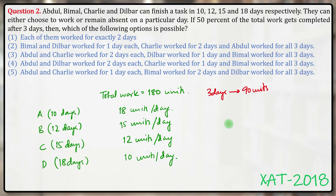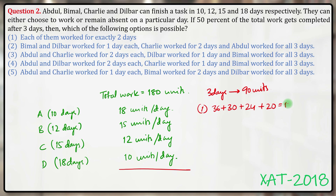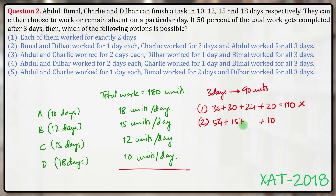Let's work out each option. For answer option 2: Abdul and Charlie — Charlie works for 2 days, Abdul works for all 3 days. Abdul working for all 3 days gives 54 units. Charlie working for 2 days gives 24 units. The units digit is not 0, so this answer option does not give 90.